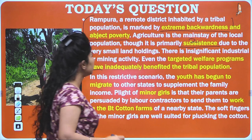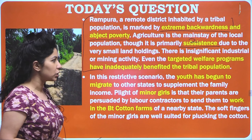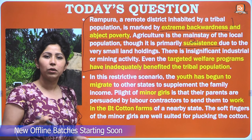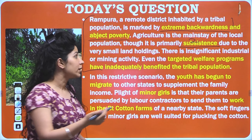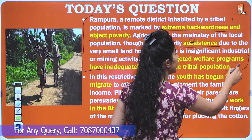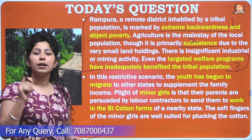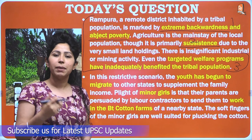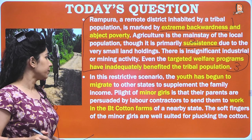The third term is that even targeted welfare programs have inadequately benefited the tribal population. Welfare measures are not benefiting tribals effectively. This is your third clue — this problem must be addressed by monitoring welfare programs and helping tribals efficiently benefit from them.